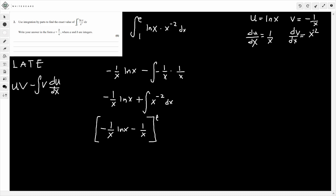e is the upper limit. 1 is the lower limit. So we sub these in. What are we going to get? We're going to get minus 1 over e times ln e. What's ln e? Remember, ln e is just 1. So this is minus 1 over e times 1. So minus 1 over e. Minus 1 over e again. We're just replacing the x here with minus 1 over e. That's the first part of the integral.